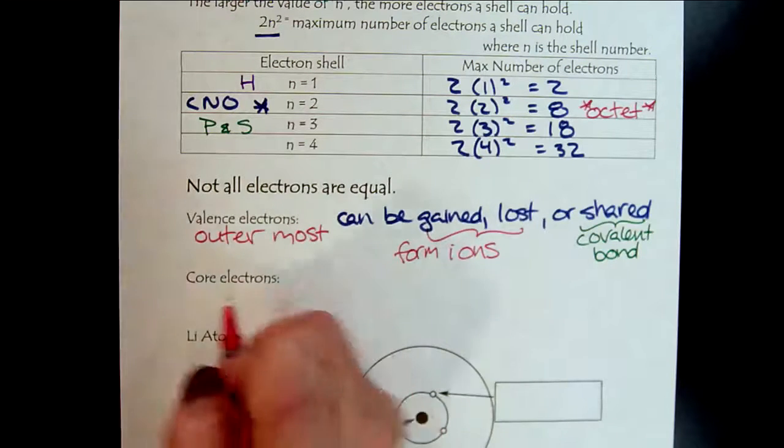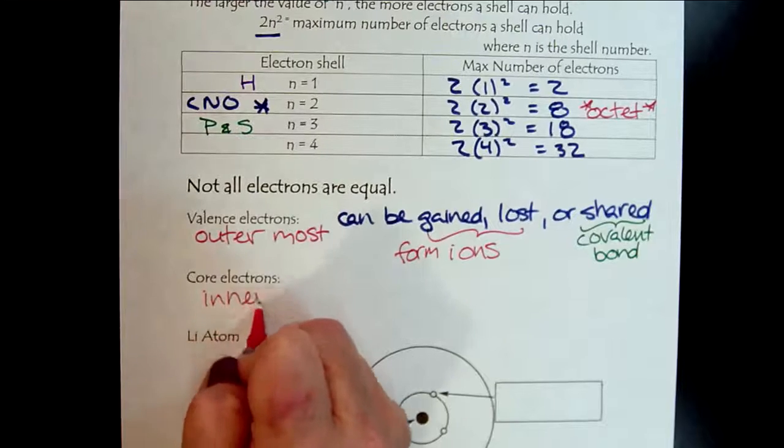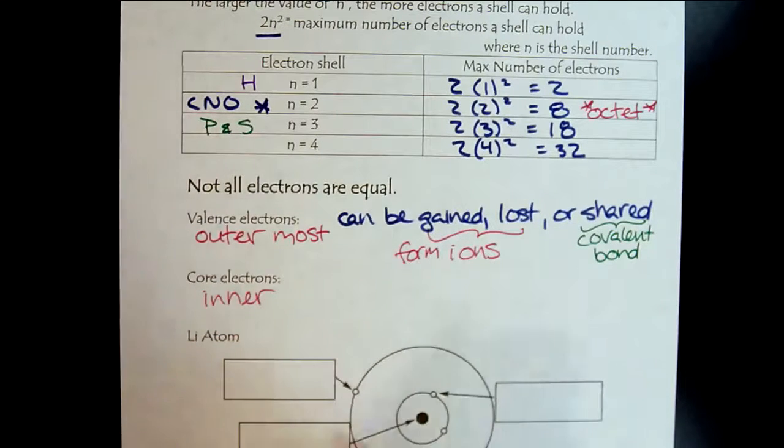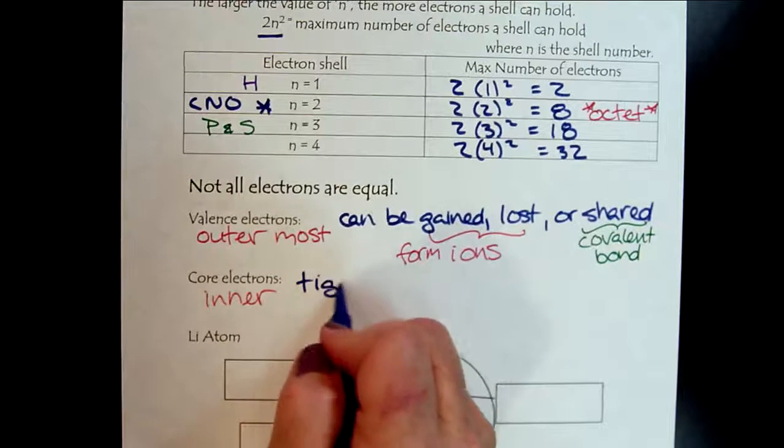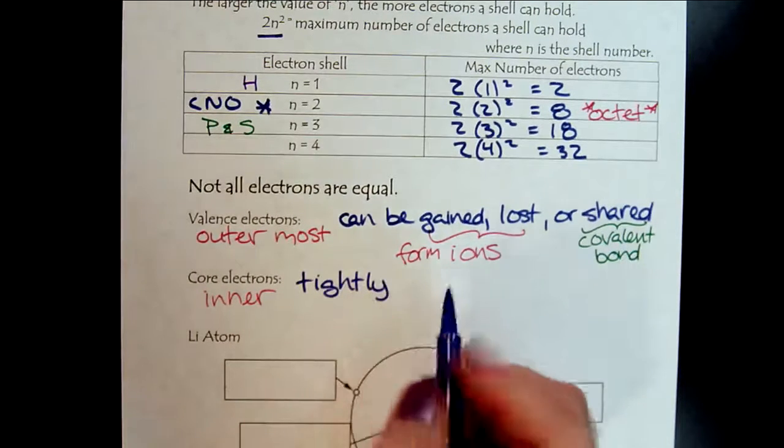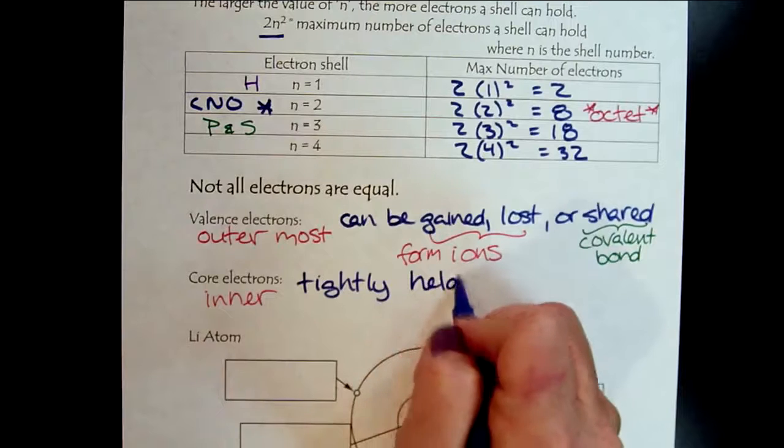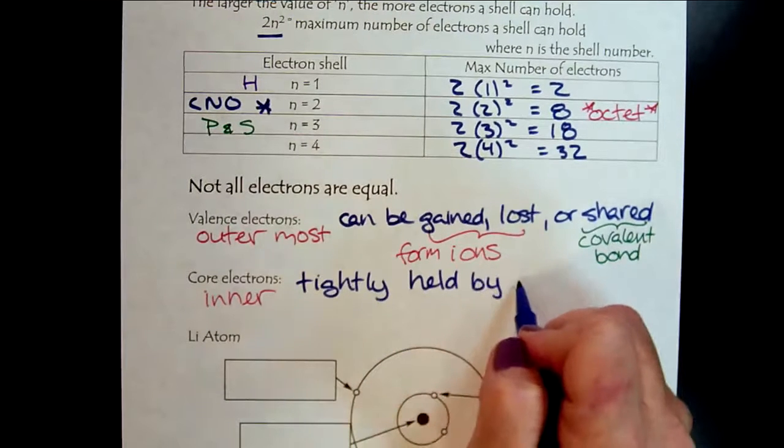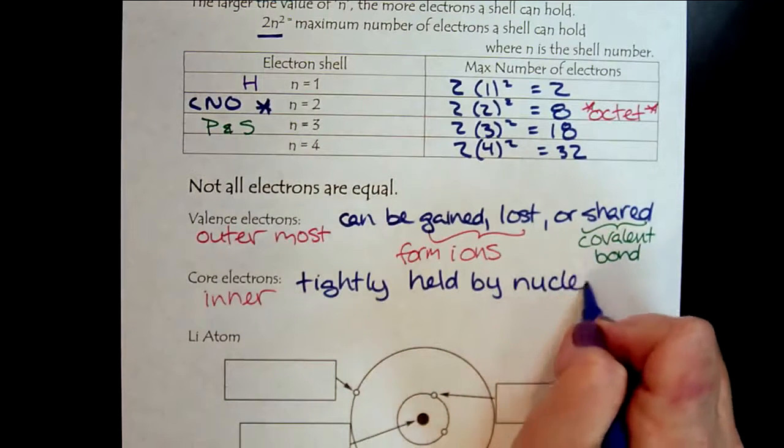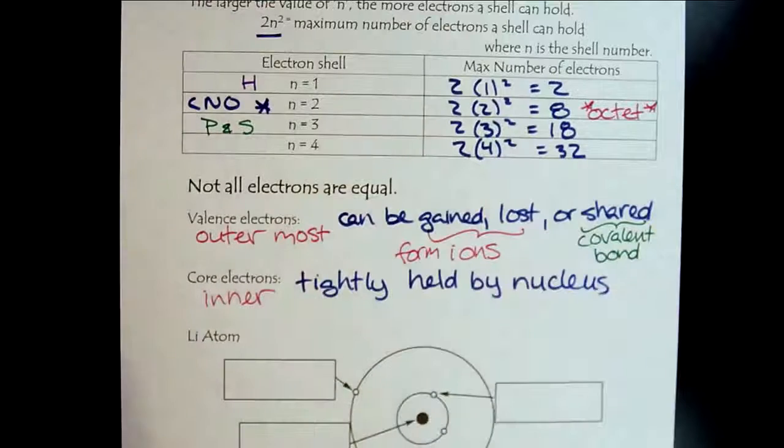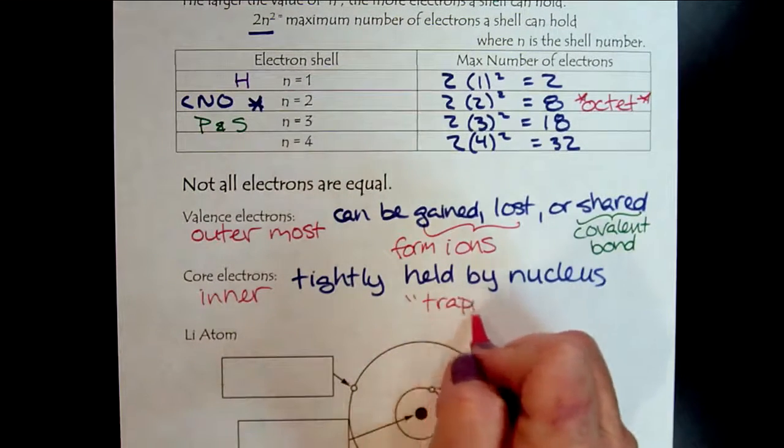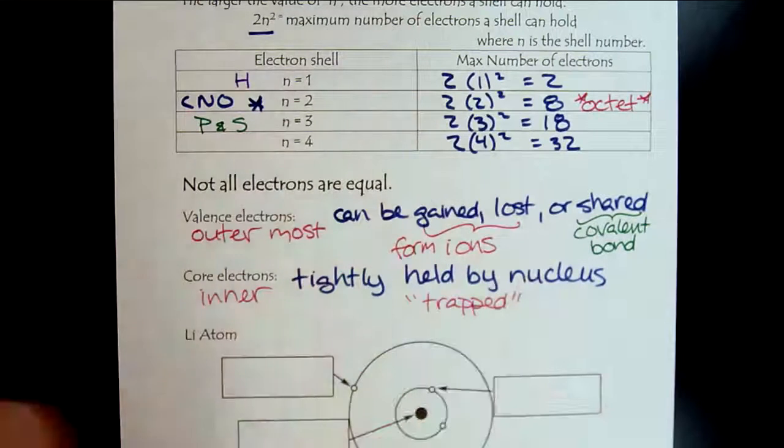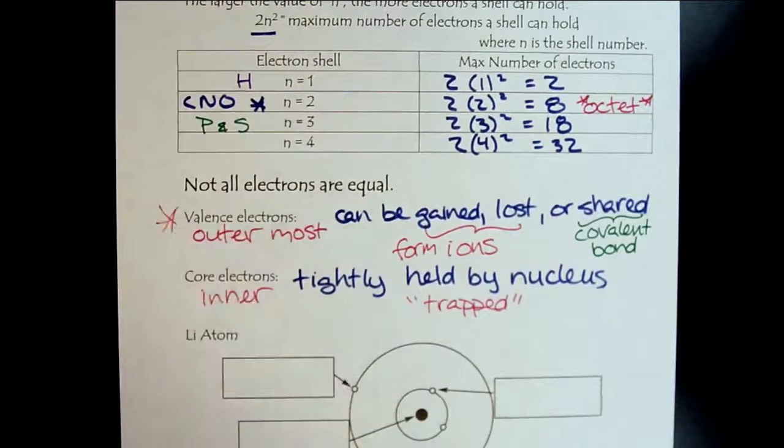And then the core electrons, these are the innermost electrons. These are the inner electrons. And these are pretty boring. They are tightly held by that positively charged nucleus. So they don't get to go anywhere. They live a pretty boring life on the chemical level. They're trapped. So the emphasis on our course will be on these valence electrons. This is where chemistry happens.